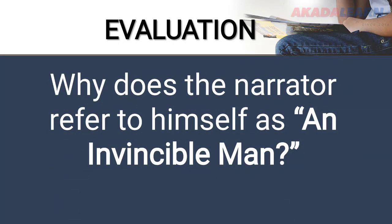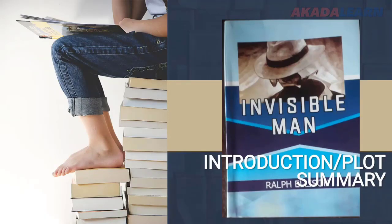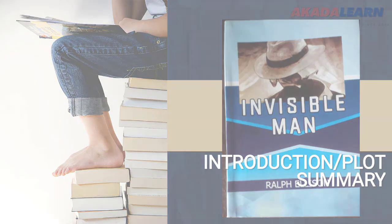Now for our usual evaluation: Why does the narrator refer to himself as an invisible man? Why do you think he refers to himself that way? We've come to the end of our class on the introduction and plot summary of Invisible Man by Ralph Ellison. In our next class, we'll be looking at the themes and style in this book — see you in the next class.